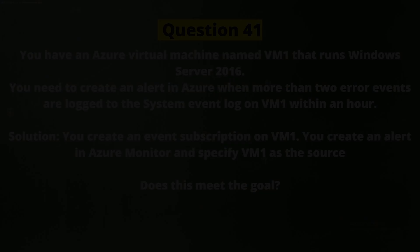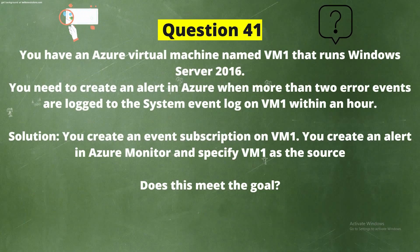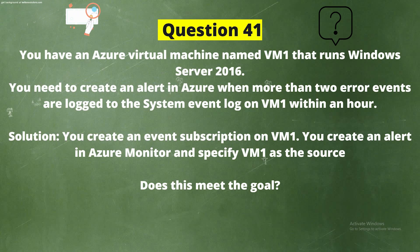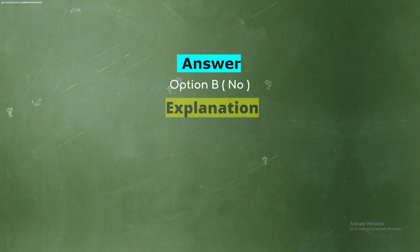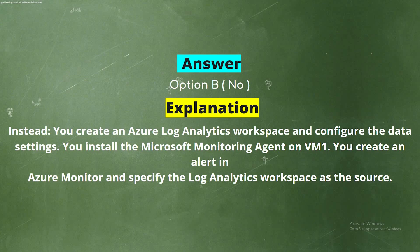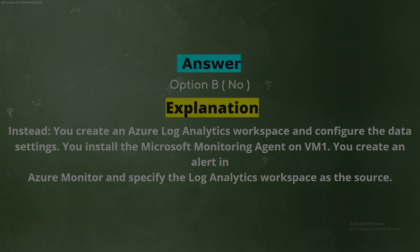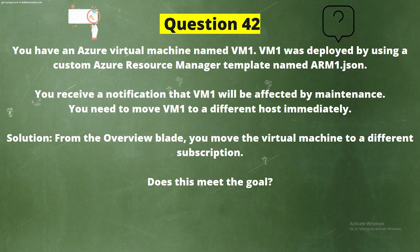Question 41: You have an Azure virtual machine named VM1 that runs Windows Server 2016. You need to create an alert in Azure when more than two error events are logged to the system event log on VM1 within an hour. Solution: You create an event subscription on VM1 and create an alert in Azure Monitor specifying VM1 as the source. Does this meet the goal? Option A: Yes. Option B: No. The correct answer is Option B: No. Explanation: Instead, you should create an Azure Log Analytics workspace, configure the data settings, install the Microsoft Monitoring Agent on VM1, and create an alert in Azure Monitor specifying the Log Analytics workspace as the source.